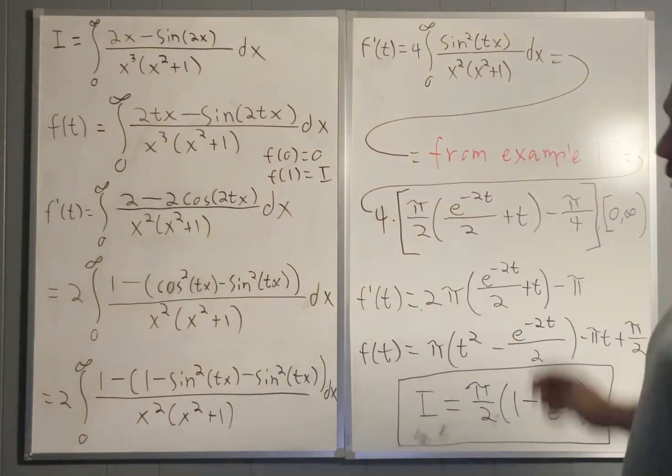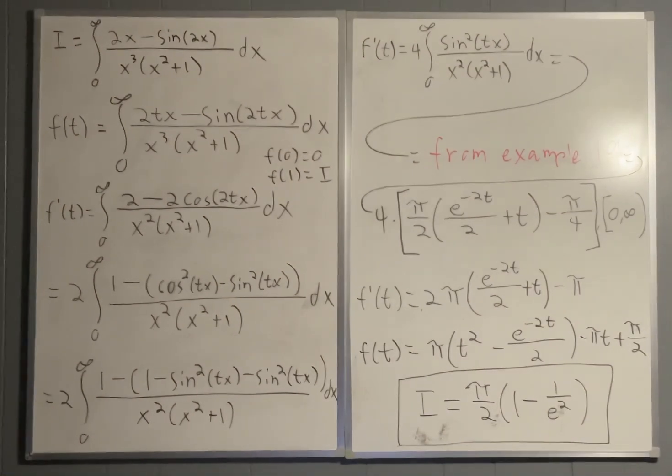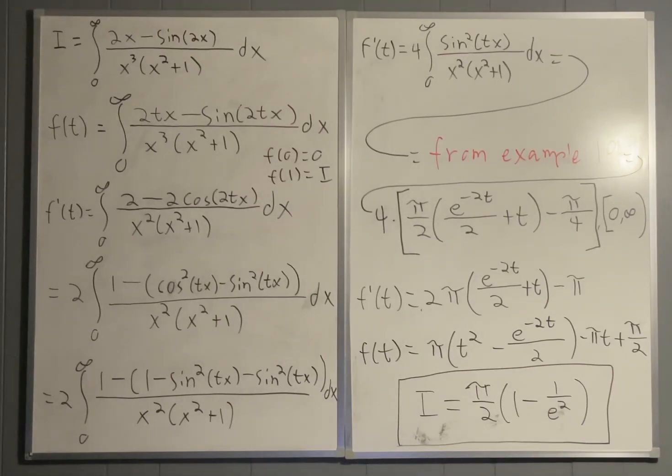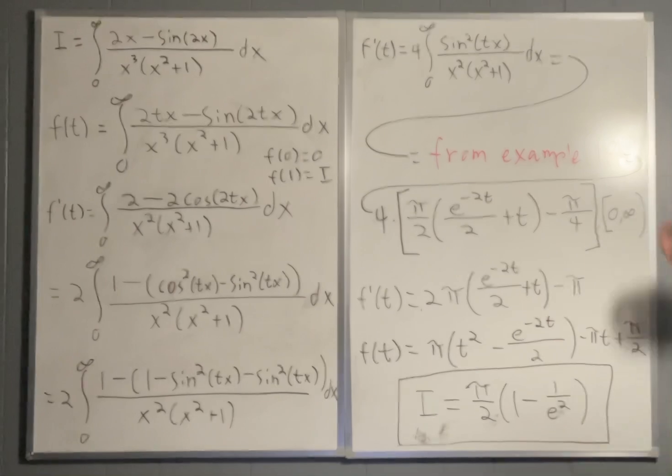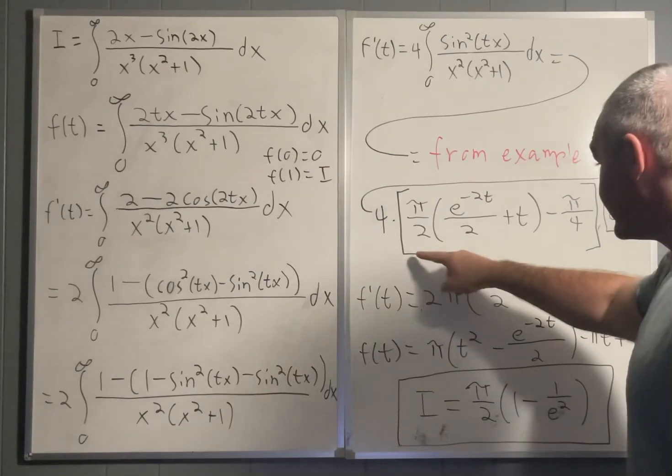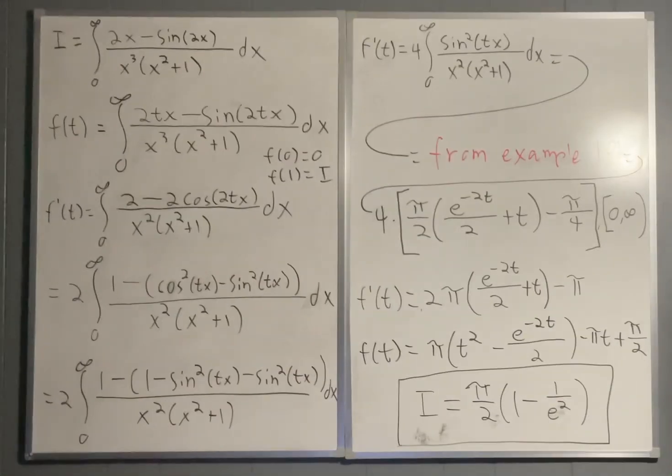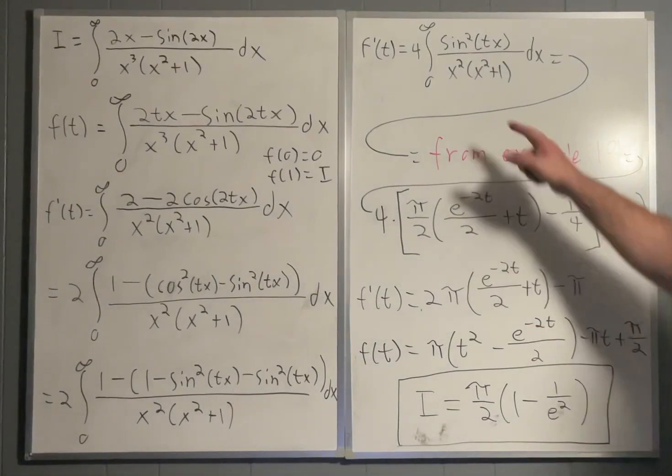And even in that video, it's from a previous video. So this video is about 4 deep in using previous examples to solve integrals. But yeah, this one utilizes a specific result from example 19. The result from example 19 is that this part is equal to pi over 2 times e to the negative 2t over 2 plus t minus pi over 4. And that's true on the interval from 0 to infinity where 0 is included. And luckily, that's what we need.